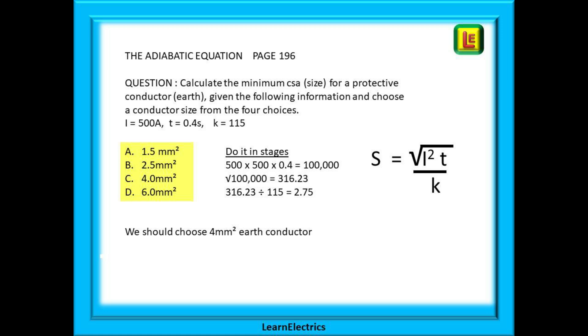Do the calculation in stages. Follow it through as shown here and you should get an answer of 2.75 millimeters. Now make your choice from those offered and we should choose 4 millimeter conductor. We have a full video on the adiabatic equations and we will leave a link in the description to this video.